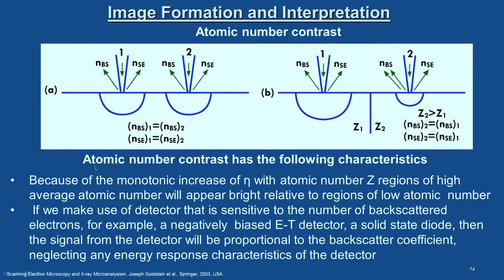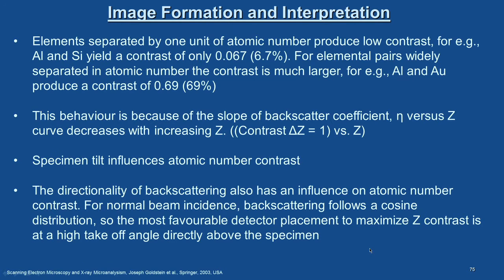Let us look at the general remarks. Atomic number contrast has the following characteristics: because of the monotonic increase of η — the backscatter coefficient — with atomic number Z, regions of high average atomic number will appear bright relative to regions of low atomic number. If we use a detector sensitive to the number of backscattered electrons — for example, a negatively biased ET detector or a solid-state diode — then the signal will be proportional to the backscatter coefficient, neglecting any energy response characteristics of the detector. Elements separated by one unit of atomic number produce low contrast; for example, aluminium and silicon yield a contrast of only 0.067, that is 6.7%.